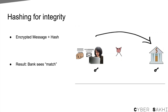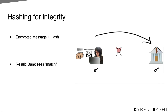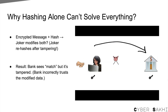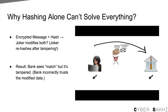Remember in the last video we saw hashing alone can't solve everything. You send a message to the bank, and to prove that the message hasn't been tampered with, you also send a hash of the ciphertext along with the actual message. The idea was for the bank to calculate the hash of the ciphertext on their end and match it with the hash of the ciphertext that you send. If the hashes matched, then the message wasn't tampered with.